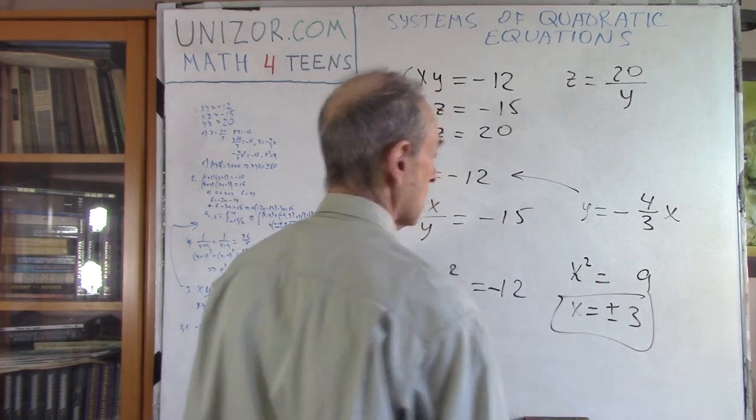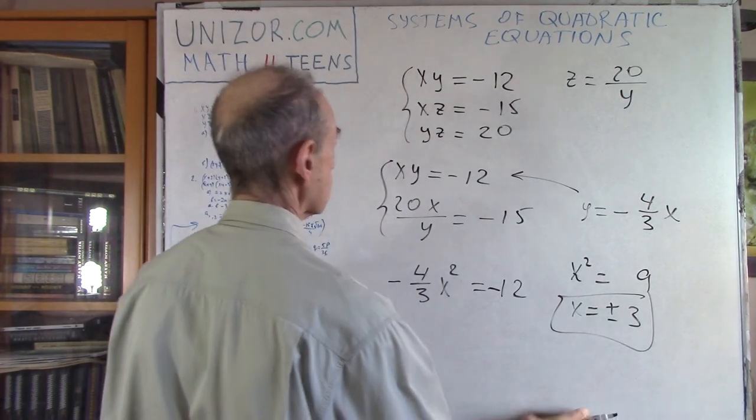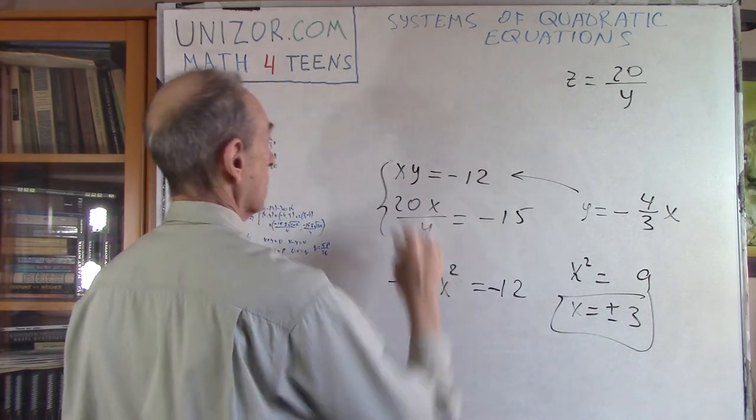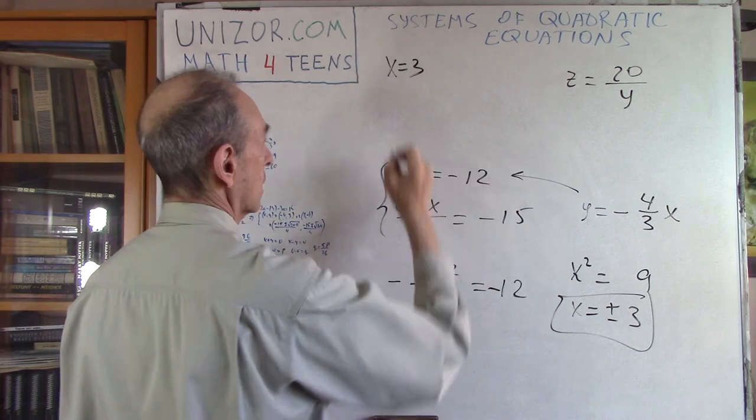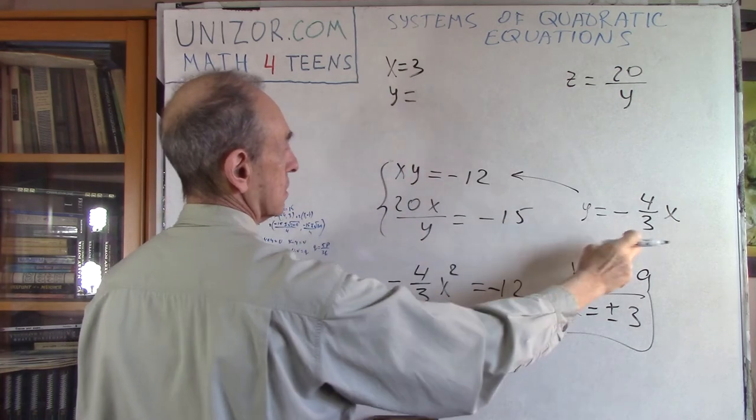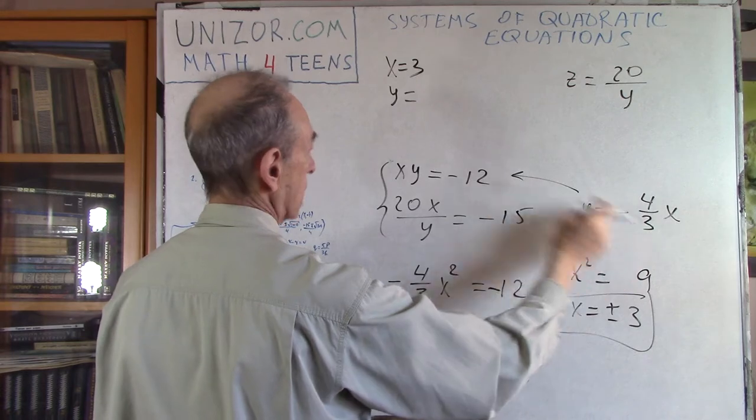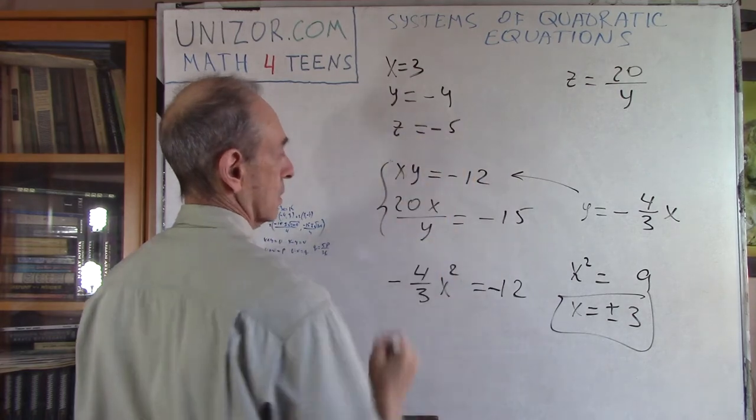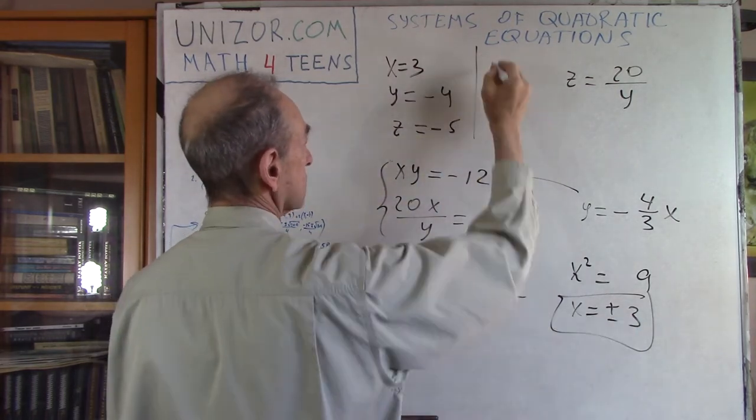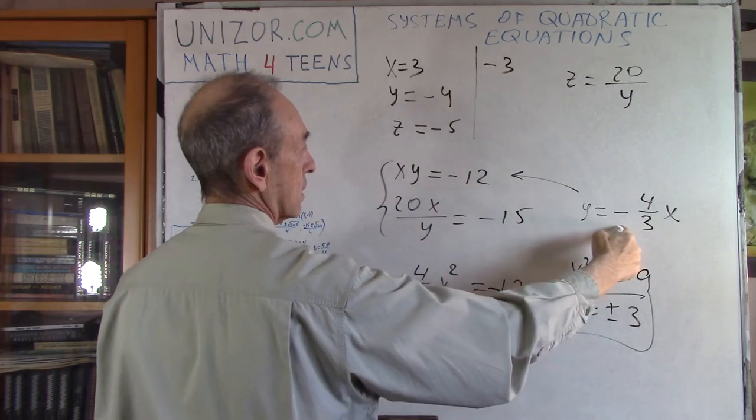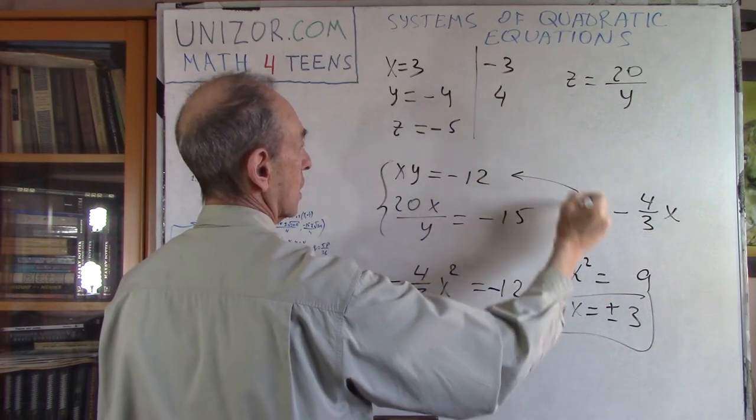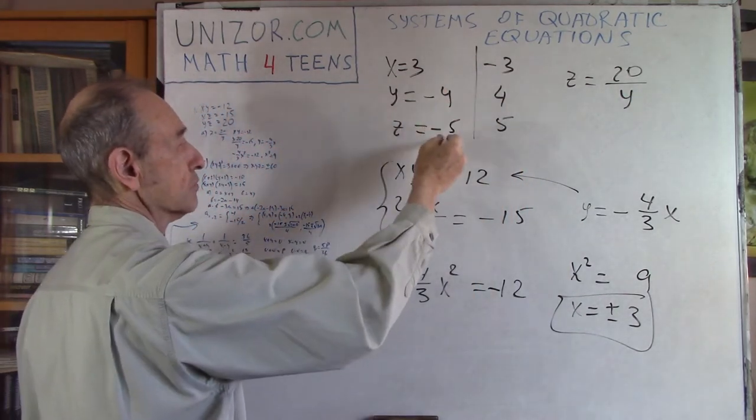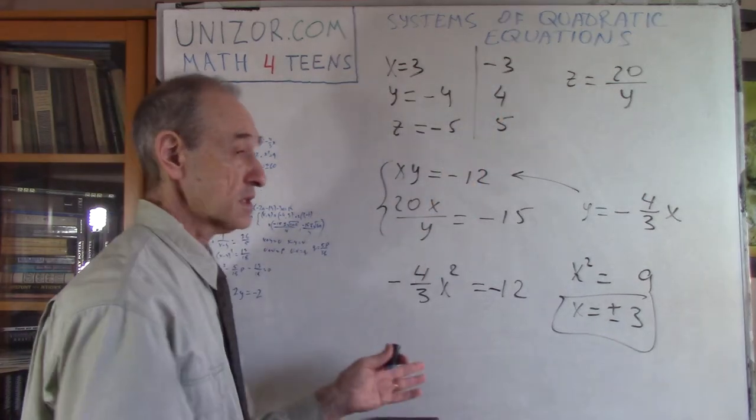So we got that. We have two different solutions. The first solution would be X equal to 3, Y equals minus 4, and Z is equal to minus 5. The second solution is X equals minus 3, Y equals 4, and Z equals 5. So we have two different solutions: 3, minus 4, minus 5 and minus 3, 4, and 5.